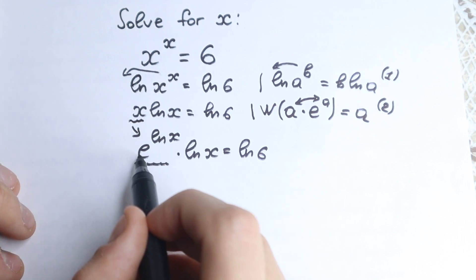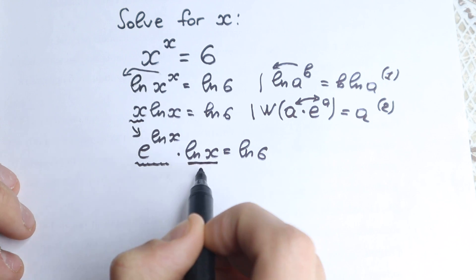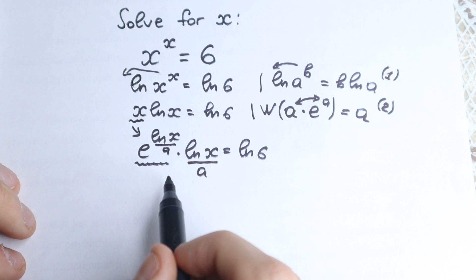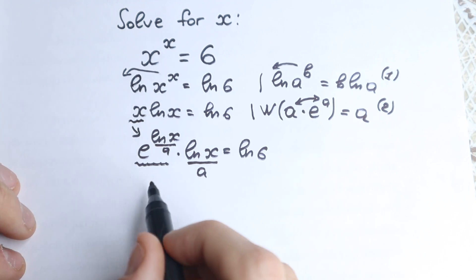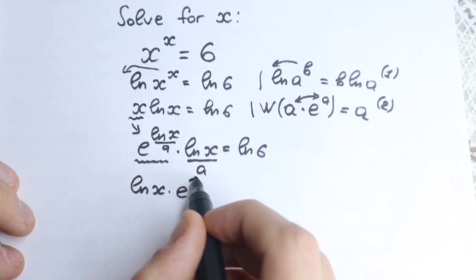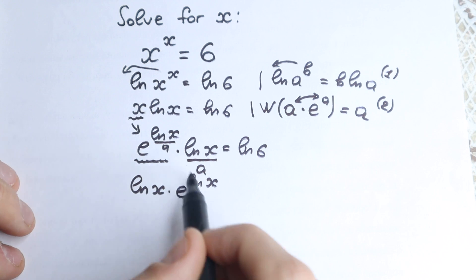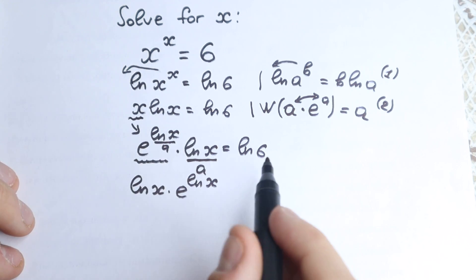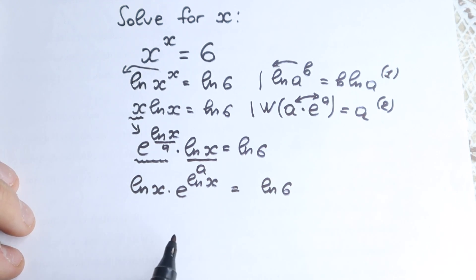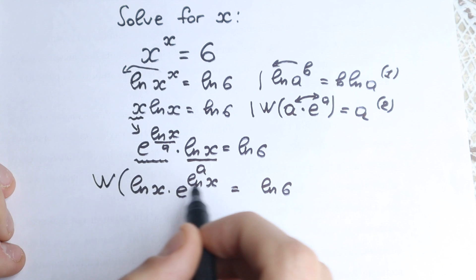Let's look closely. We have e, and we have powers and elements right here. If we say natural log x is our a, then this natural log x is the same a. So it looks really great to apply the Lambert W function. But the order here is a little different — I want to change the order. So we have natural log x times e to the power natural log x equal to natural log 6. I change the order because this is a product and we can easily do this. Now we apply the Lambert W function on both sides.